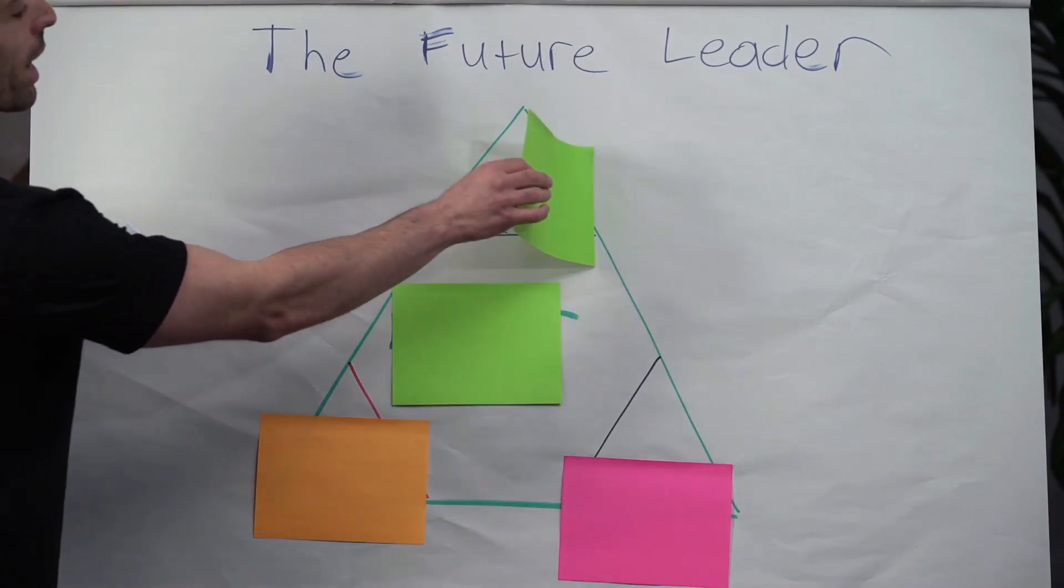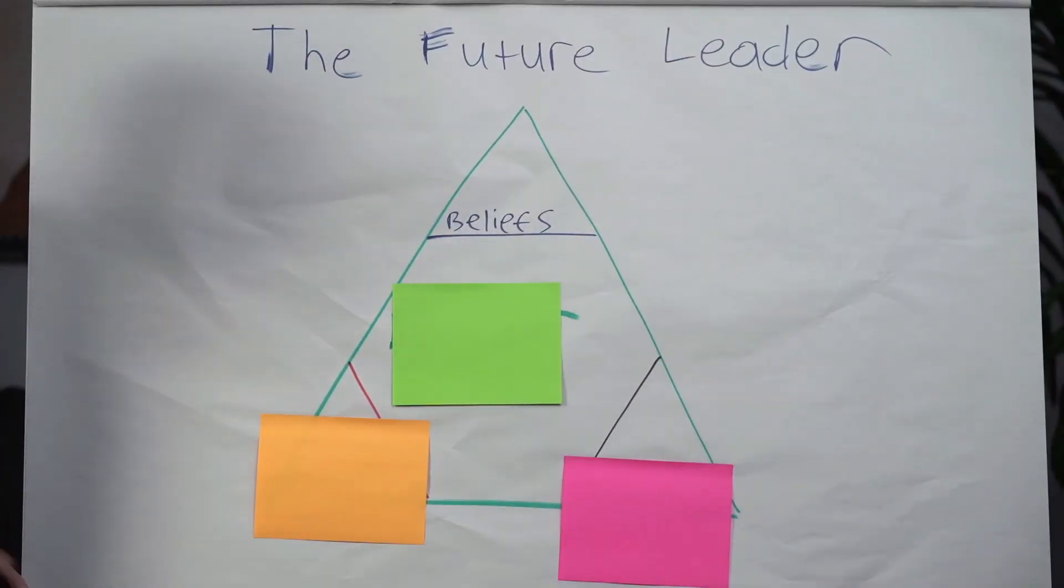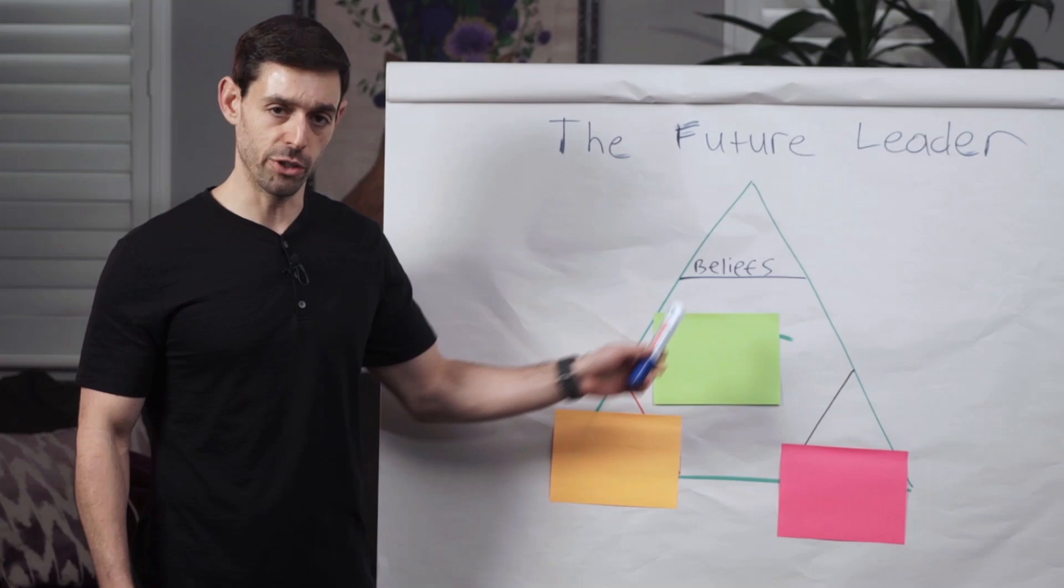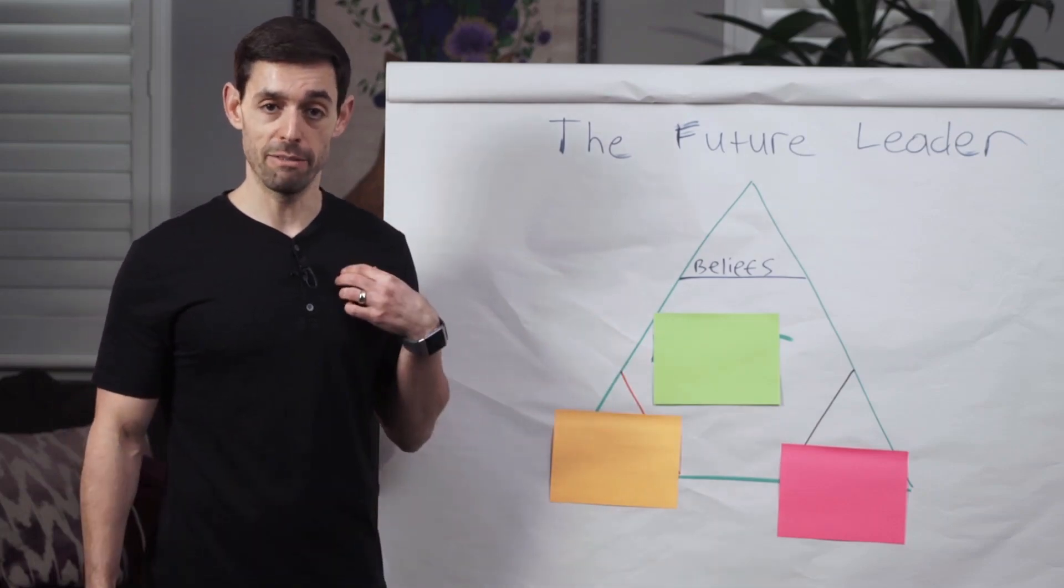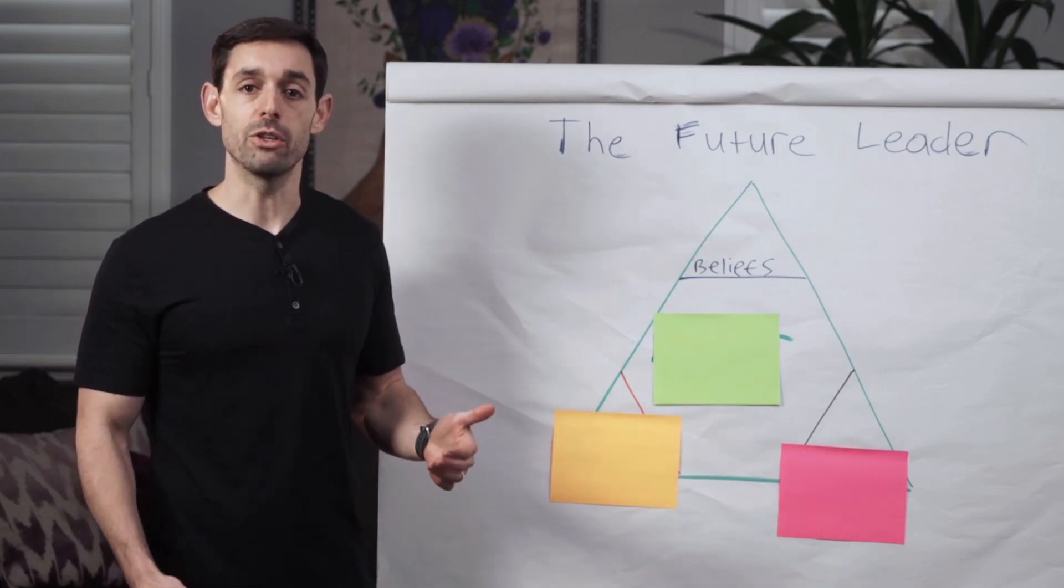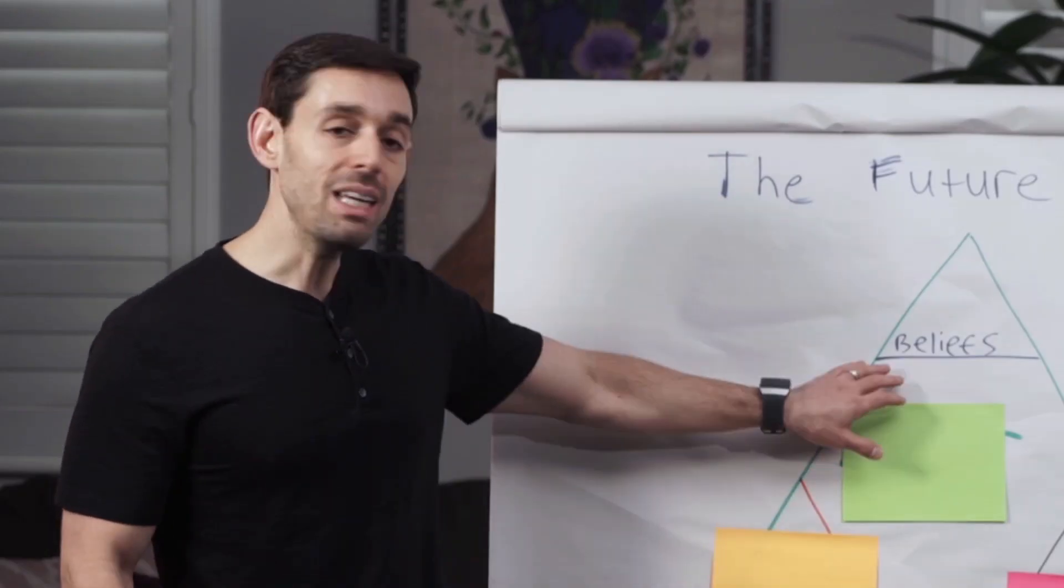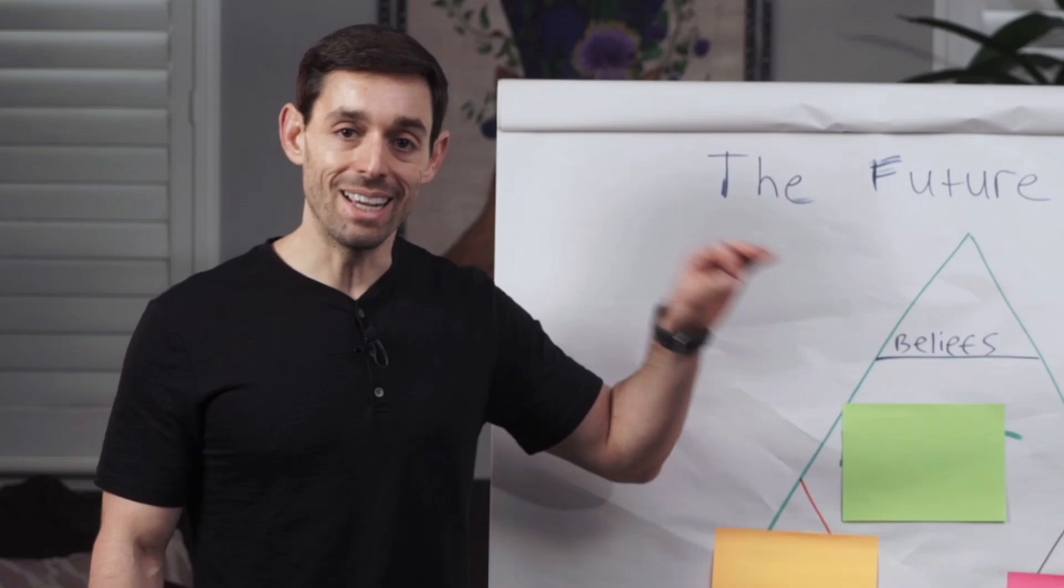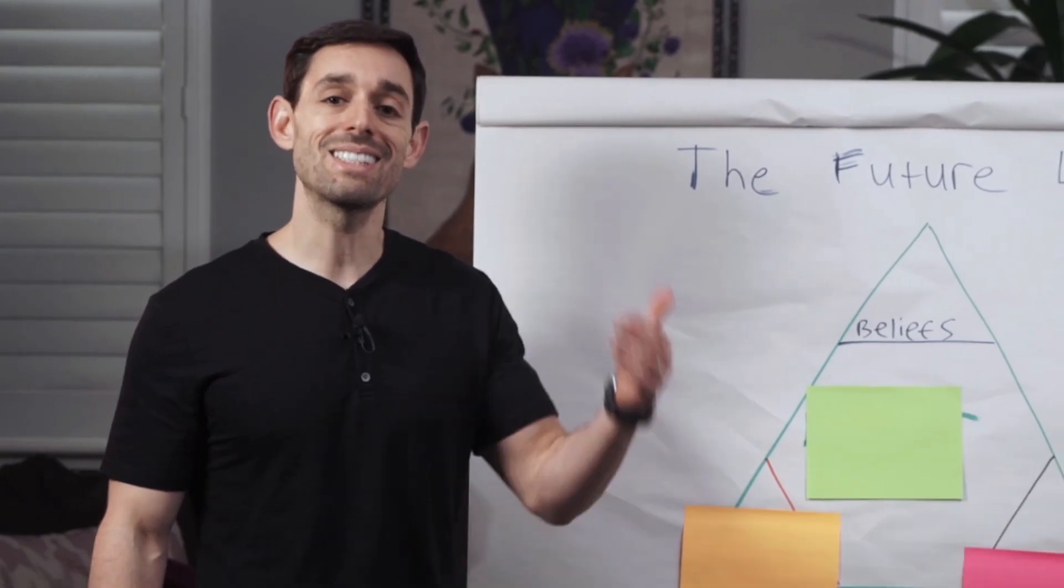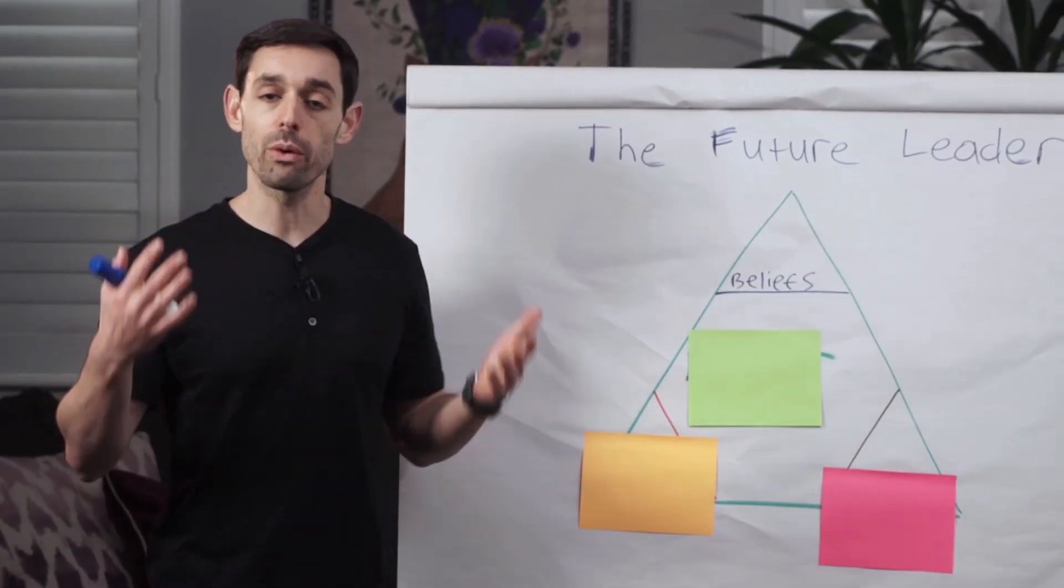Let's start off with the top of the triangle here. We have your beliefs. Your beliefs are ultimately your North Star, your philosophy on life, your philosophy on leadership. For example, my belief is that we all deserve to show up to work every day to be part of an organization where we feel like we genuinely want, not need to be there. My belief is that everyone in an organization who is in a position of leadership should embrace the skills and mindsets that I'm going to be talking about during this course. This is my belief, this is my North Star.